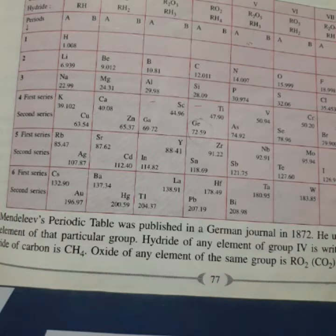He was the first chemist to classify all the 63 elements known at that time. Mendeleev studied the relationship between atomic mass and element's physical and chemical properties. Physical properties such as density, boiling point and melting point.